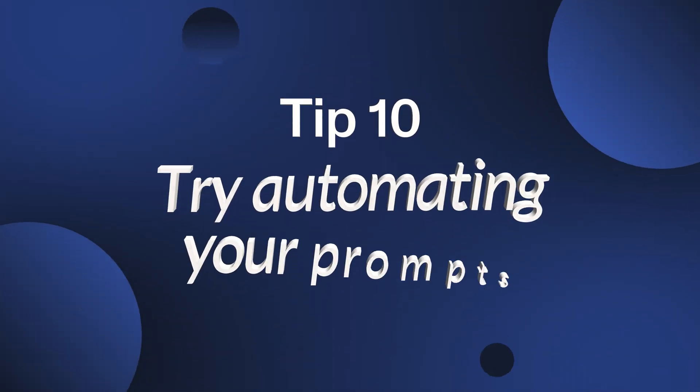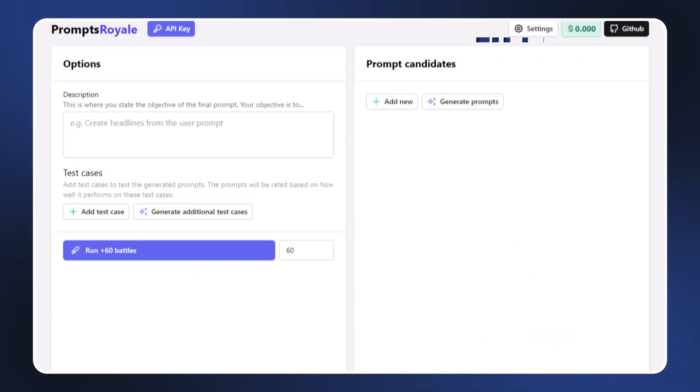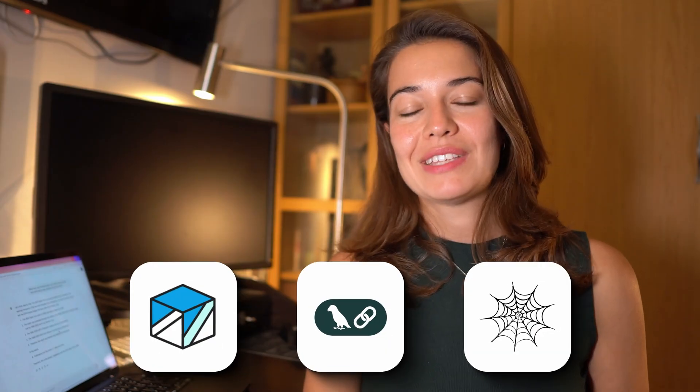Tip number ten is to try automating your prompts. Even prompting can be automated. If you're working on a use case where you want the best possible prompt, use some of the prompting tools online to get the most optimized prompt. Some tools you can use are Chatbot Arena and Prompts Royale, but there are many others out there — a quick Google search will get you the best one for your scenario. Or better yet, ask an LLM to recommend one.